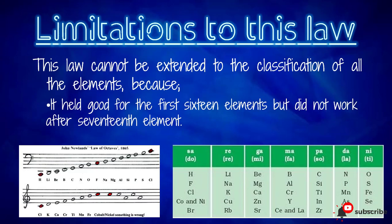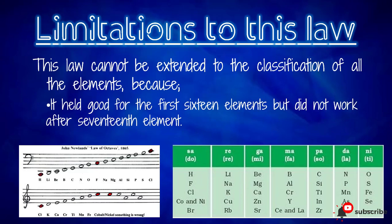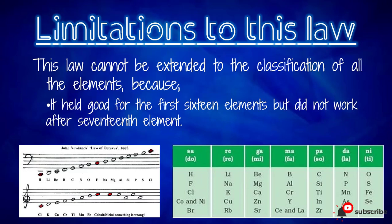There is disturbance in the position of the following elements, showing that they do not have similar properties anymore. Secondly, hydrogen was not included in the sequence because of its variant characteristics. These were the reasons for the failure of this law.